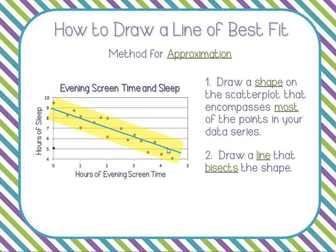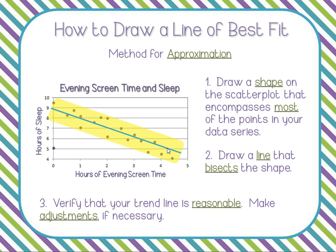We can verify the line is reasonable by counting our points. We have eight points above the line and nine points below — so eight above, nine below, which is roughly the same. If I had maybe ten above and four below, I could go back and adjust. As long as there's about half above and half below, your line is reasonable. Keep in mind this is a method for approximation — we're just estimating, not doing an exact science. Your line of best fit might vary a little from mine or your neighbor's, and that's okay, as long as they're close.